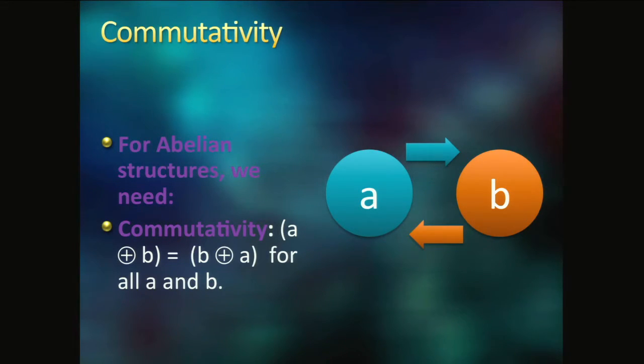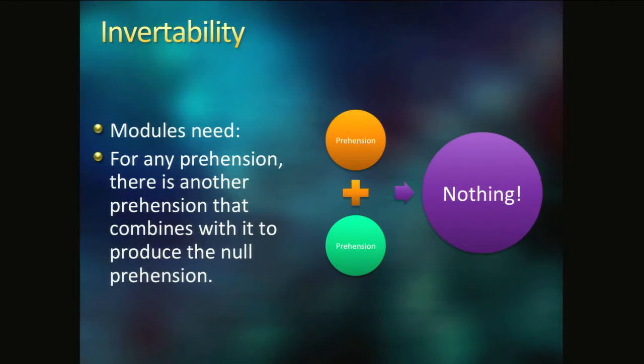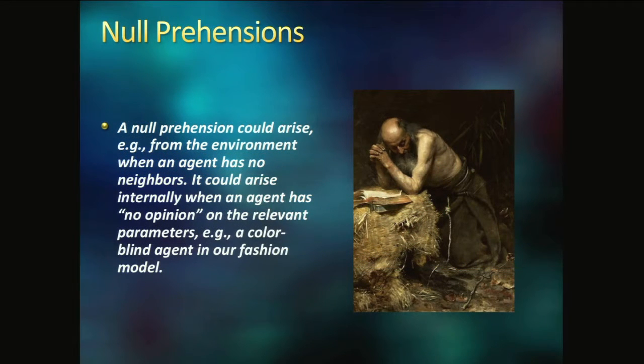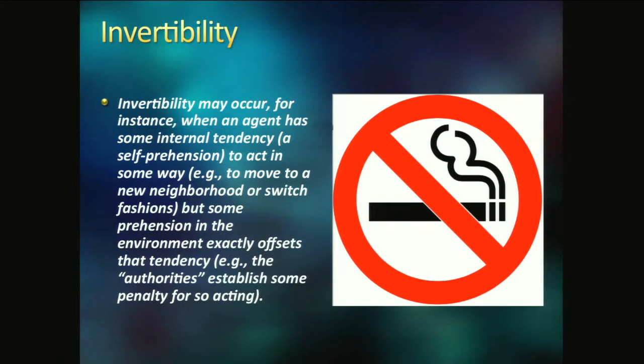For when we get up to modules, for instance, or abelian groups, we add commutativity. Modules add invertibility. This is basically an agent's view of its environment and of its own internal state. Null prehension is nothing that's interesting in the environment. I'm not going to change. Invertibility. If you have a tendency, for instance, a tendency to smoke, but then there's a smoking ban, that will cancel out that and that will invert it and you'll get back the null prehension. Essentially, nothing will happen because the ban will cancel out your tendency. So, I'm showing you how we can apply these abstract algebraic concepts to agents.